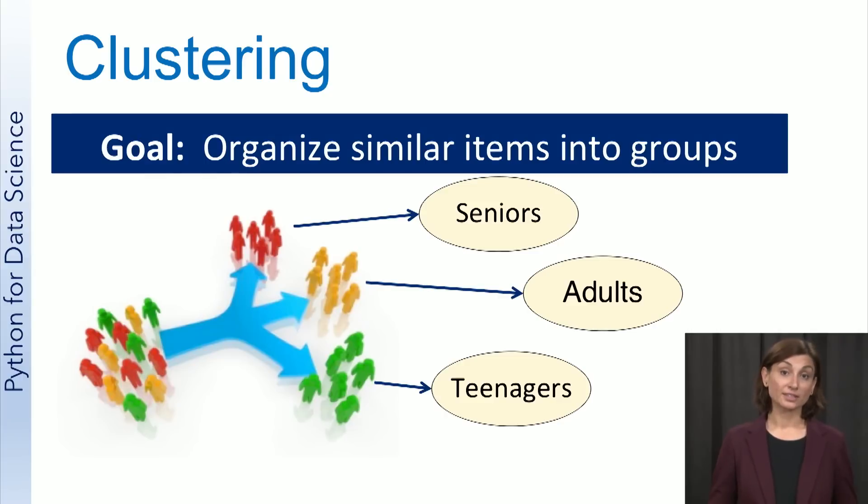Other examples include identifying areas of similar topography, for example, mountains, desert, plains, for a land use application, and determining different groups of weather patterns, like rainy, cold, or snowy.